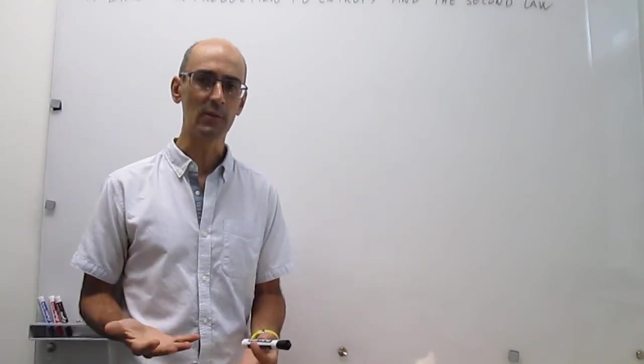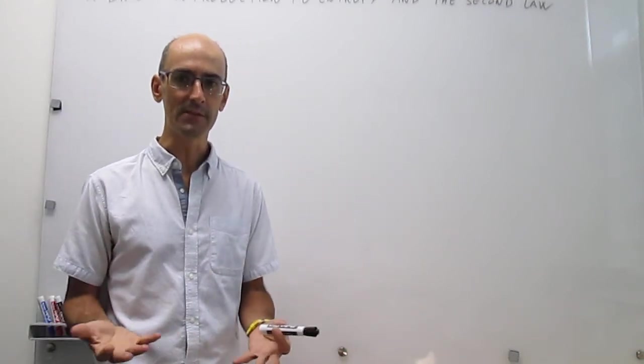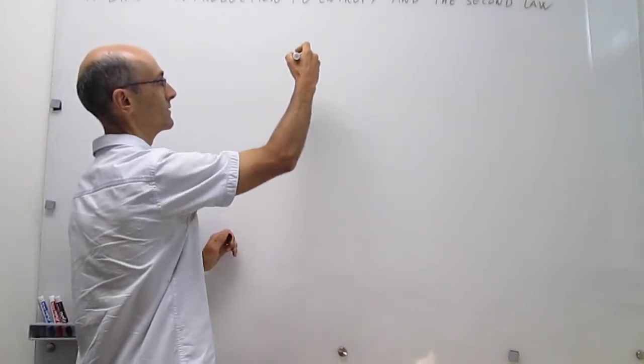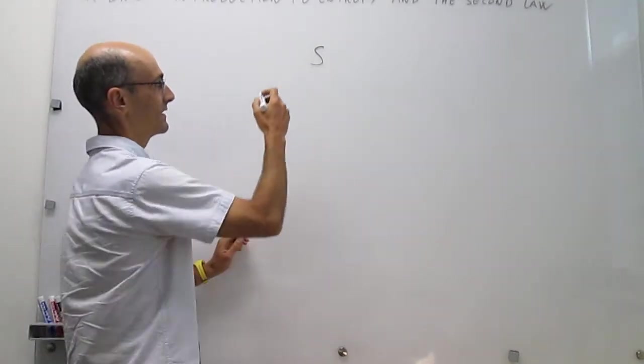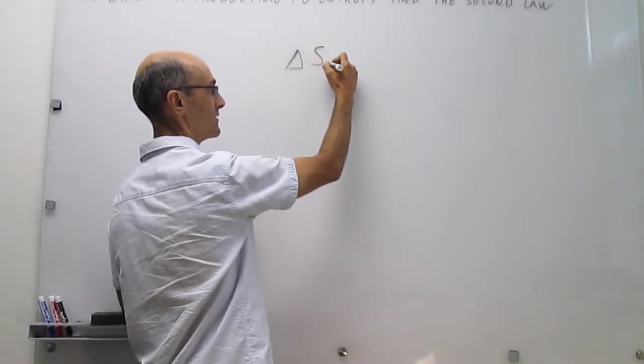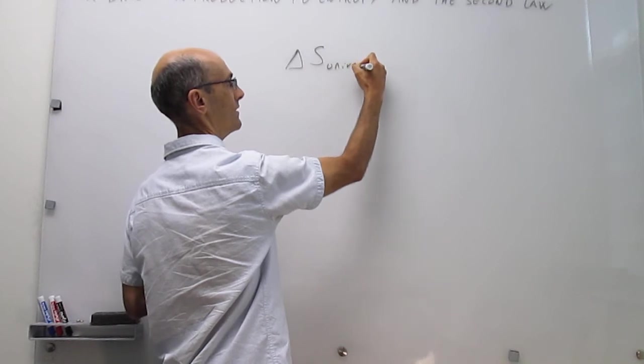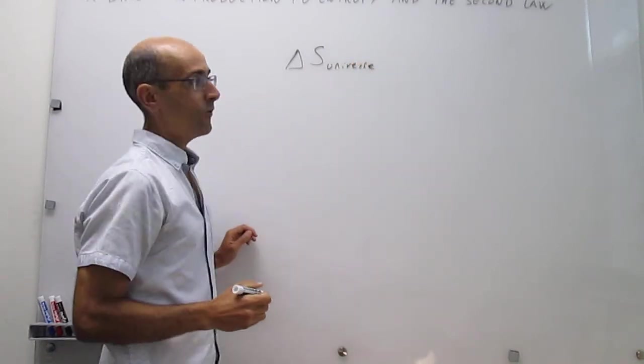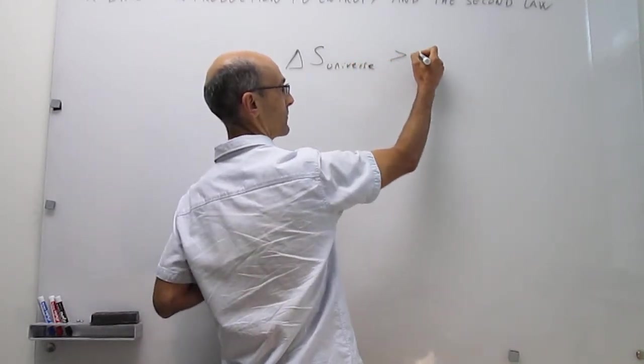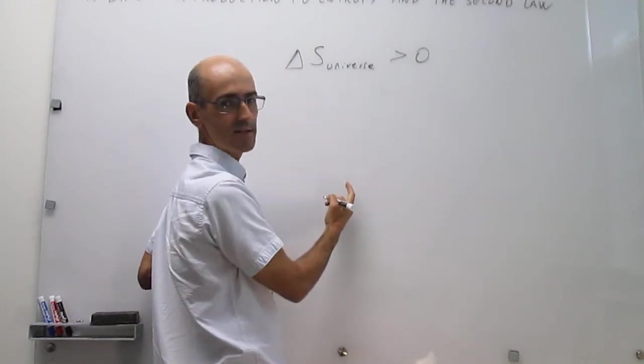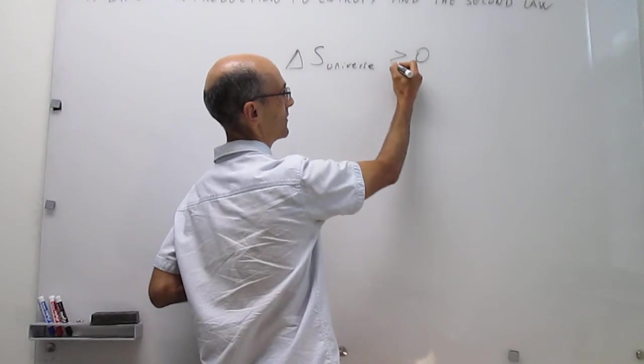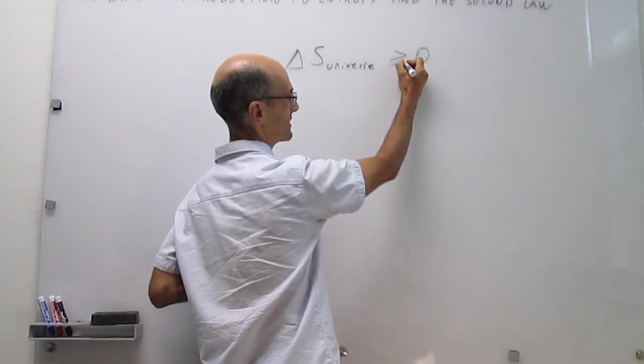So actually that leads us to the second law, the statement of the second law, which simply states that entropy, which is going to be denoted by the letter S, the change in entropy in the universe, will be larger than zero if the process is spontaneous.